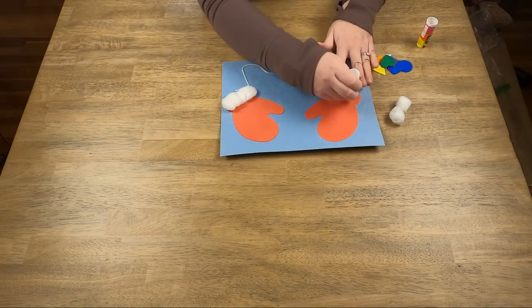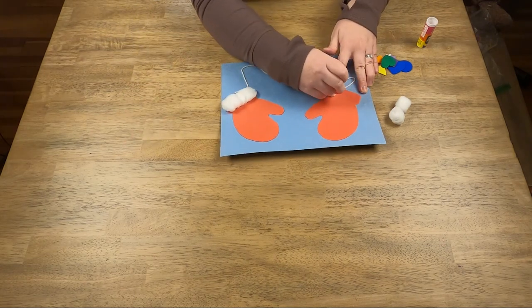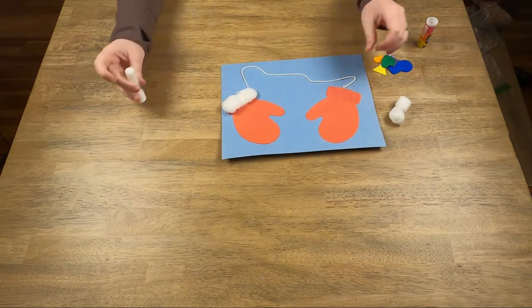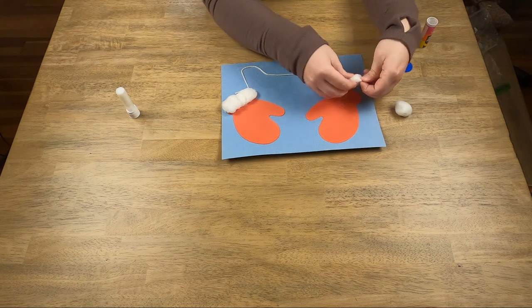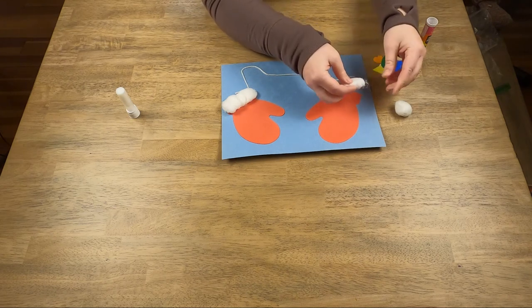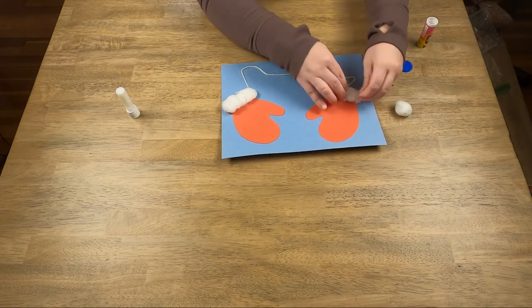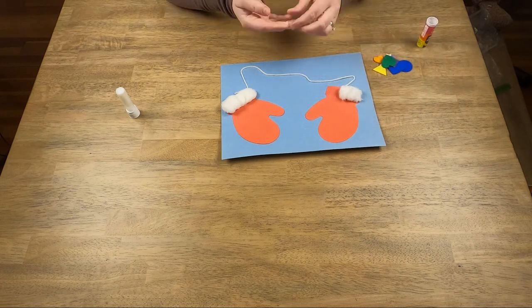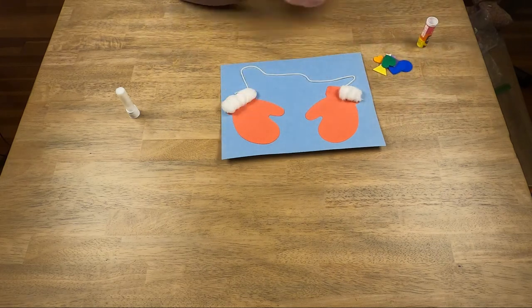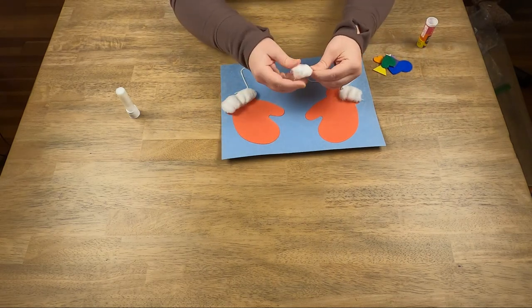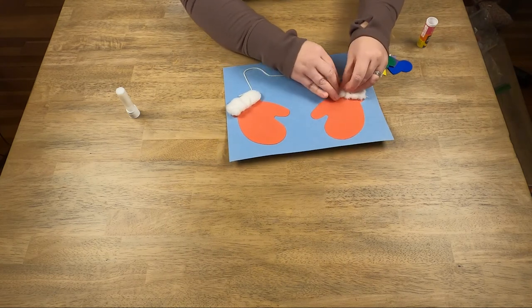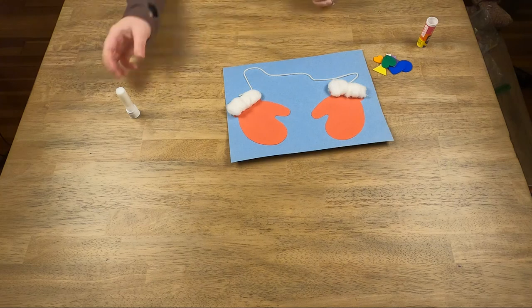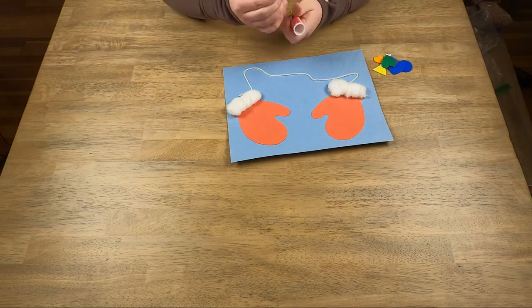And then I'm gonna do the other side. Stretch out your cotton ball, put it on half. It might stick to you a little bit but that's okay. And then stretch out the other one and stick it on the last half. Alright, so I'm all done with my glue stick.